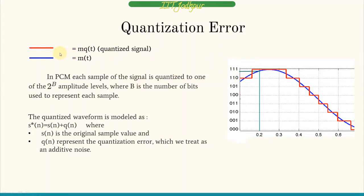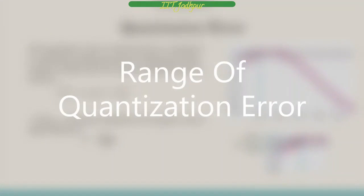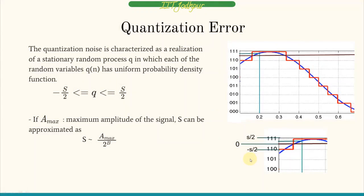The blue line represents our original signal and the red line represents our quantized signal. At time instance 0.2, the sample value was lying between 111 and 110, but it is assigned 111, introducing some error. The quantized waveform S*(n) equals S(n) plus Q(n), where S(n) is the original sample and Q(n) is the quantization error treated as noise. The maximum error is ±S/2, so Q is uniformly distributed between −S/2 and S/2.